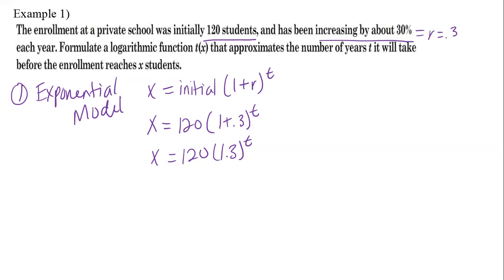The exponential model tells us that if I know the year, I can predict the enrollment. Does that make sense? Because x depends on t. What they want us to create is where t depends on x. So in order to do that, we need to solve for t.